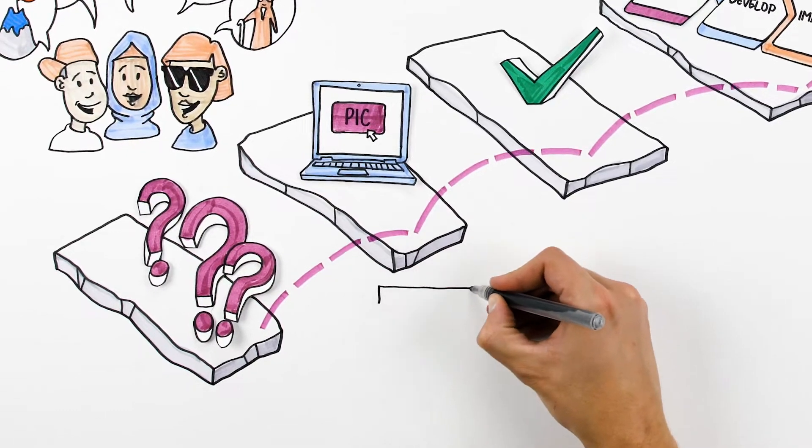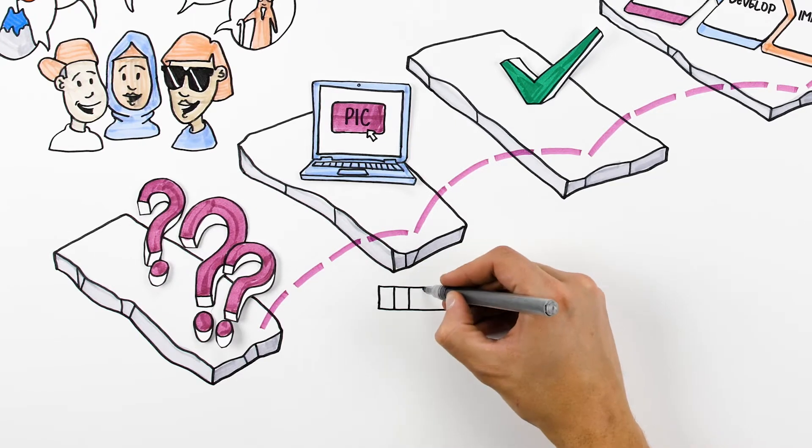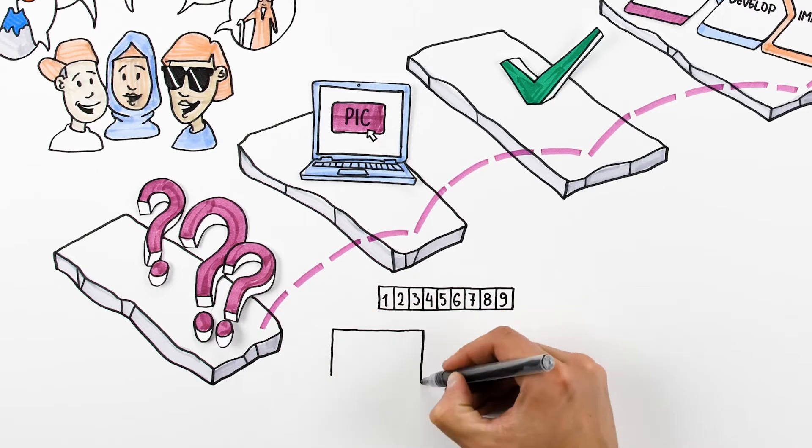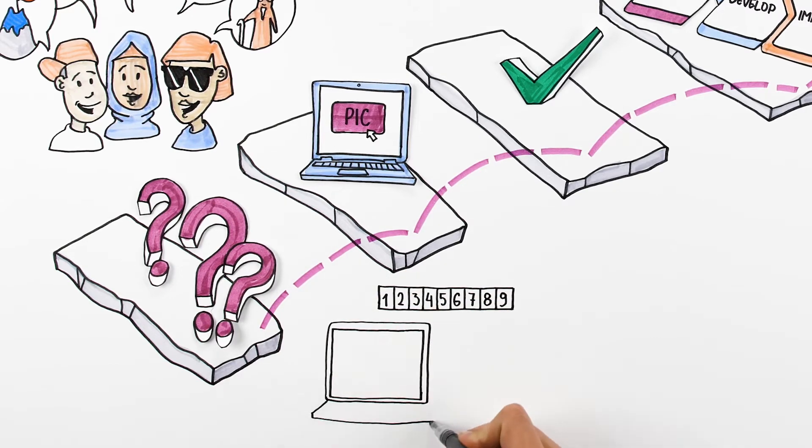Before applying, your organization will need to obtain a PIC for your organization. This is a nine-digit number which is unique to your organization and it will allow you to complete the application form.